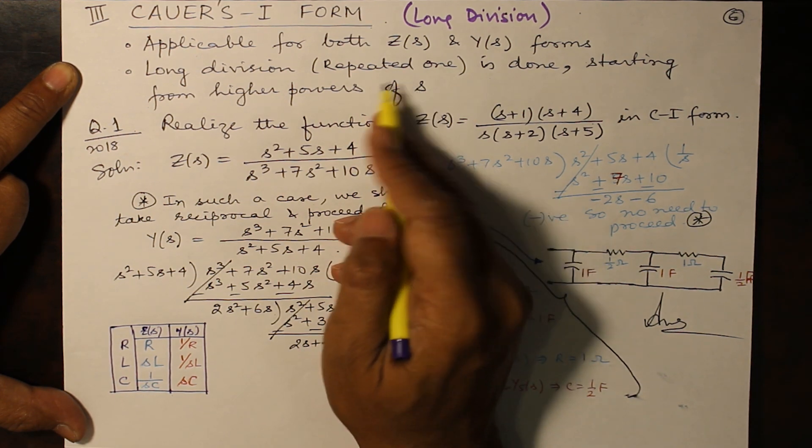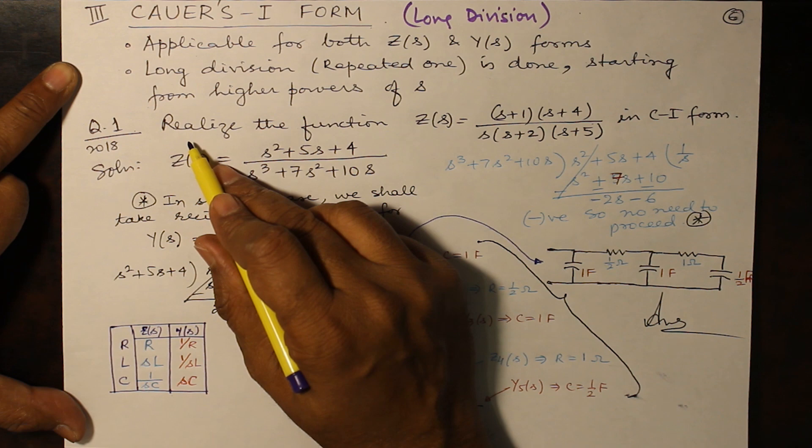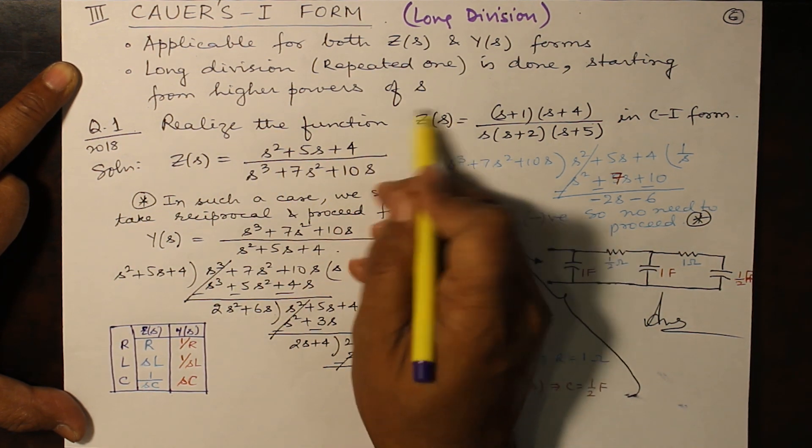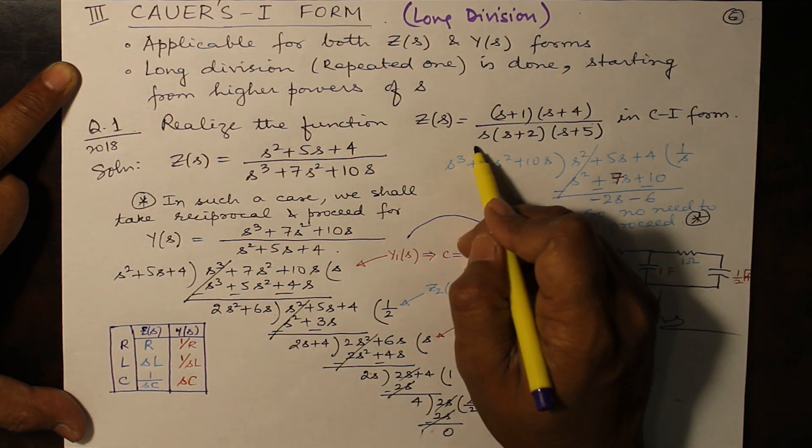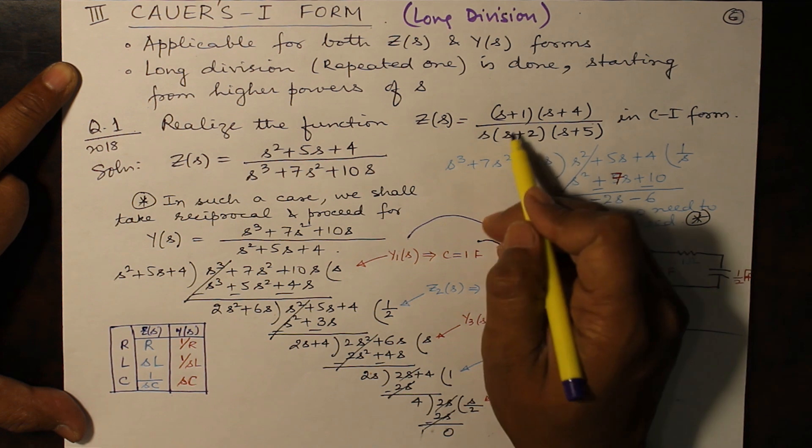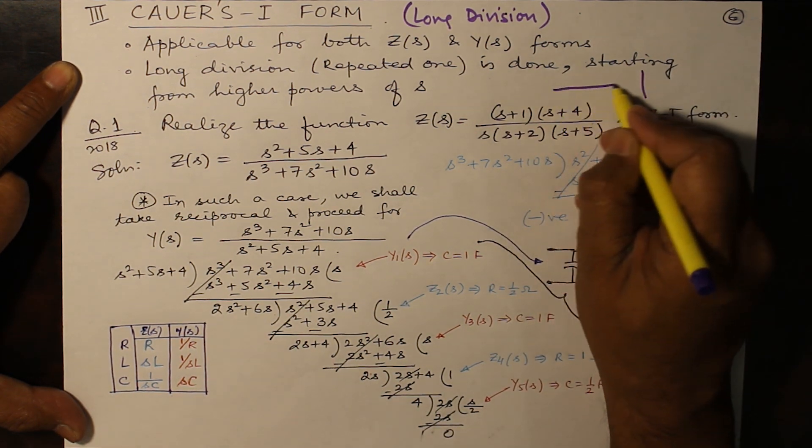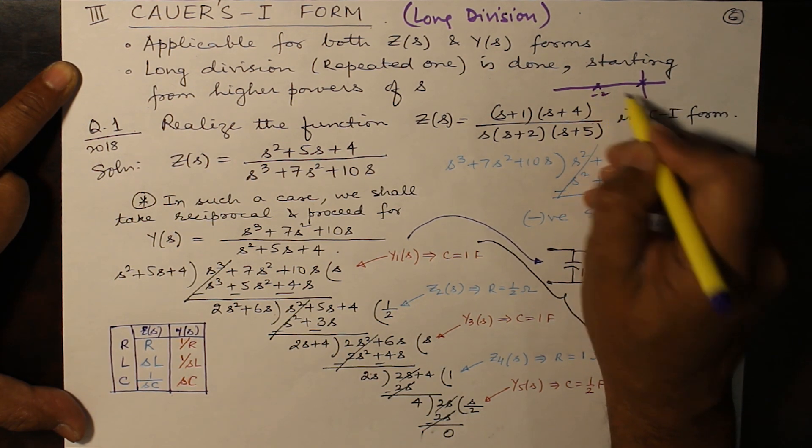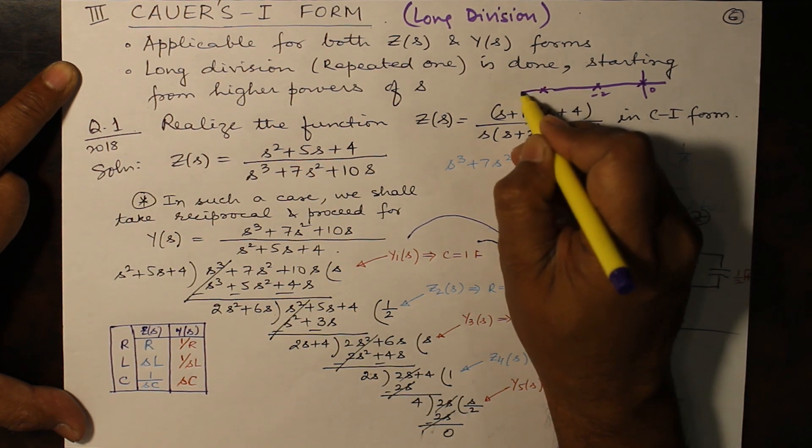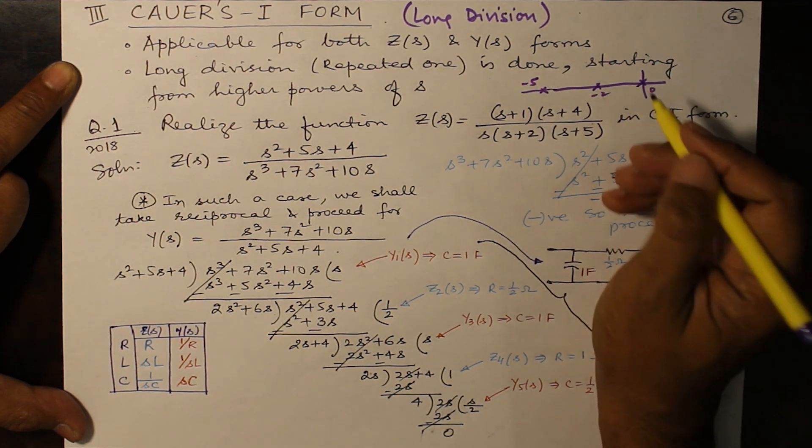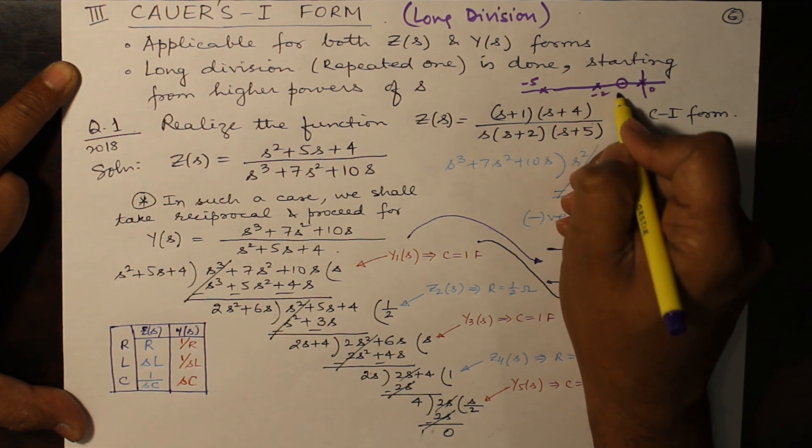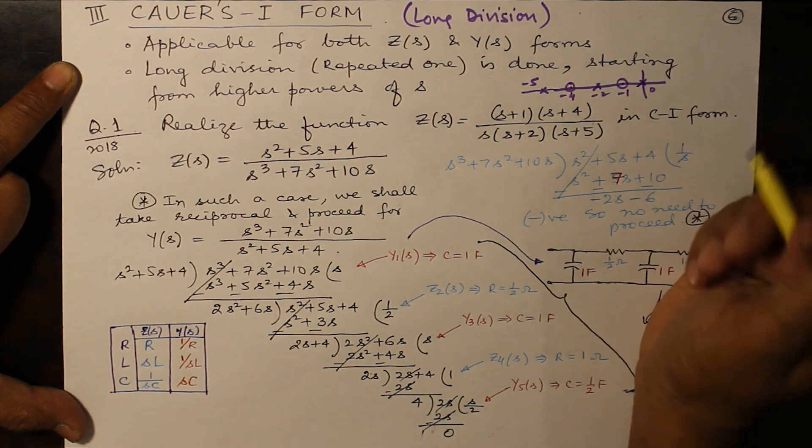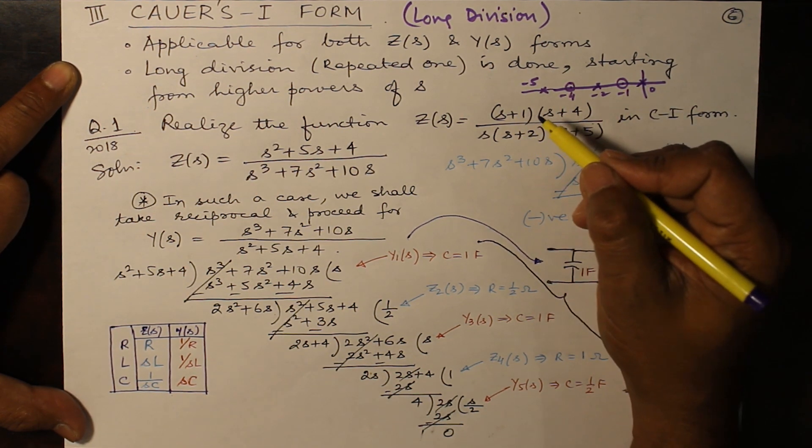The question is: realize the function Z(s) which is an impedance function, (s+1)(s+4) divided by s(s+2)(s+5). Here you find if you draw the pole-zero diagram, you have a pole at origin, another pole at -2 and another pole at -5, and zeros are at -1 and at -4. For such a diagram you are going to get an RC network.